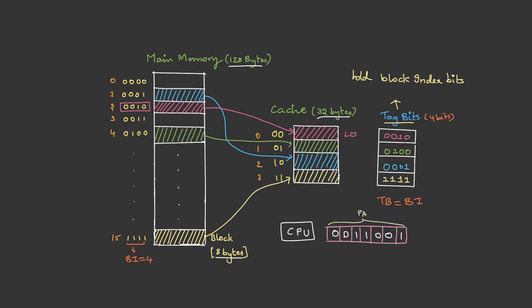Let's try one more example. Suppose this is a physical address — the least significant 3 bits are the block offset and the remaining bits are the tag bits. Again the CPU compares the tag bits with each line's tag bits. The first comparison fails, the second, third, and fourth also fail. Therefore the CPU understands this is a miss.